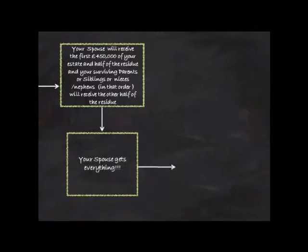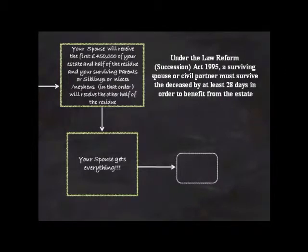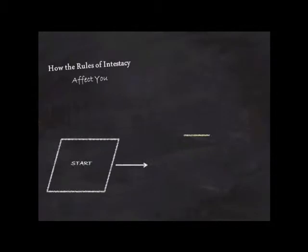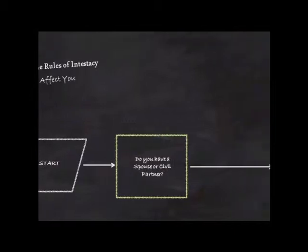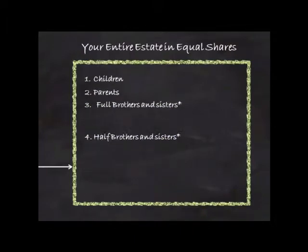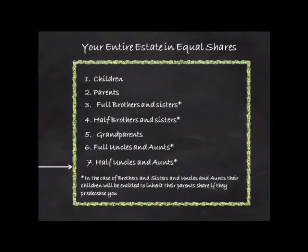These surviving relatives, in order of priority, will receive the other half of the residue absolutely. Your spouse will receive your entire estate if all of these blood relatives predecease you. If you do not have a spouse or civil partner, your entire estate will pass to your blood relatives in equal shares in the following order of priority. In the case of brothers and sisters and uncles and aunts, their children will be entitled to inherit their parent's share if they predecease you.